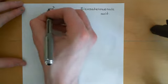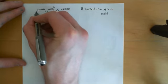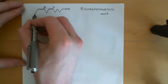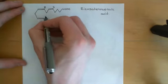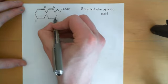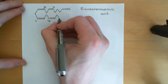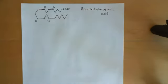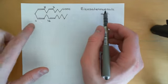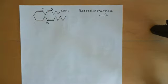Arachidonic acid has one double bond between the 5th and 6th carbons, another between the 8th and 9th, another between the 11th and 12th, and then between the 14th and 15th — beautifully symmetric. So strictly speaking you should call it icosa-5,8,11,14-tetraenoic acid, though everyone often just calls it eicosatetraenoic acid.